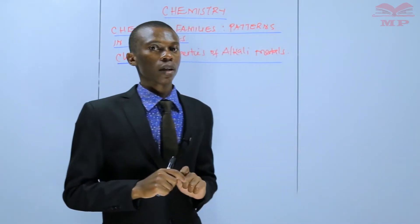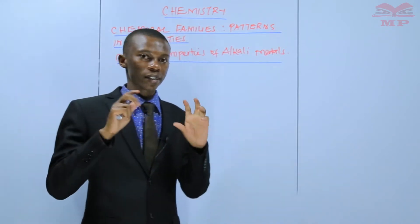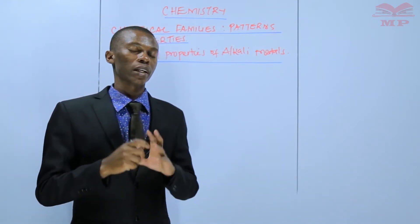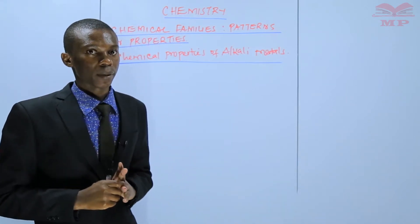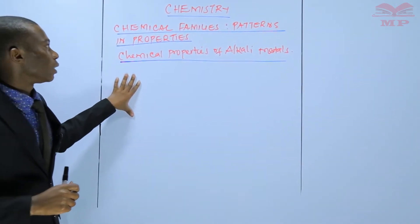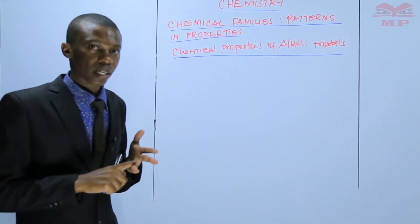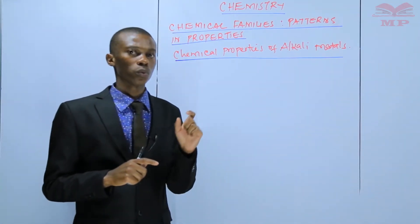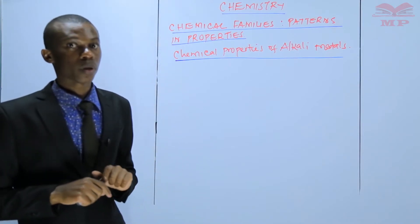Therefore, in this lesson, by the end of this lesson, you should be able to write chemical equations. When you look at the chemical properties of alkali metals, there are reactions of alkali metals with oxygen, with water, and with chlorine. In this lesson, we will start with the reaction of alkali metals with oxygen.